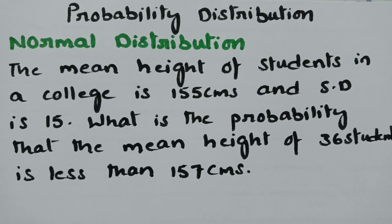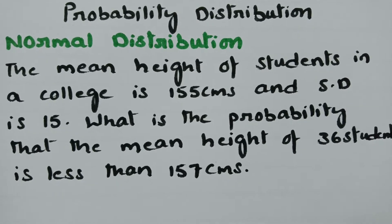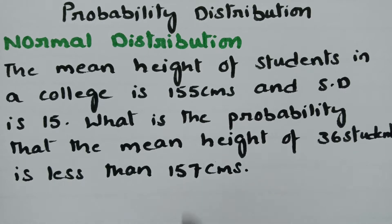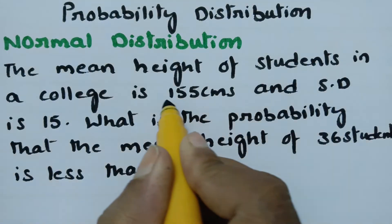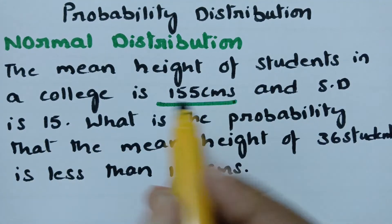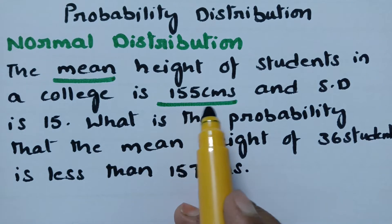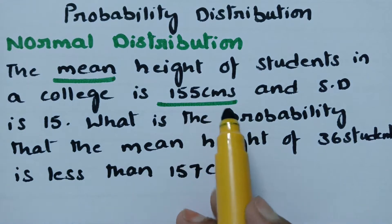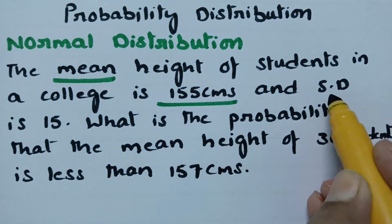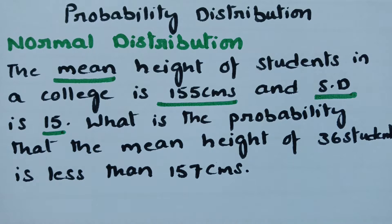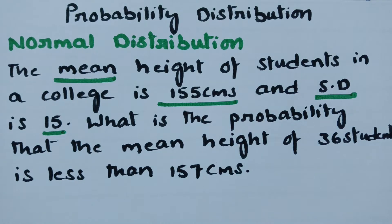Normal distribution. In today's video, the problem is: the mean height of the students in a college is 155 centimeters. The mean is given as 155 centimeters and the standard deviation is given as 15. If mean and standard deviation are given, we have to go with normal distribution.